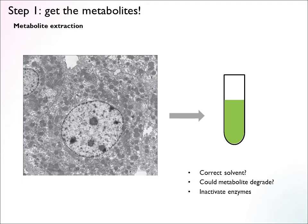Let's start at the beginning. You have a sample — say a cell extract, tissue extract, or plasma. Step one is really to get the metabolites out, and this is called metabolite extraction. Usually you grind up tissue if you have a tough sample, or if you have cells you can just lyse them. Then you have to do an extraction to get the metabolites into solution, and for this you have to choose a solvent. If you have polar metabolites you're interested in, you will need a polar solvent.